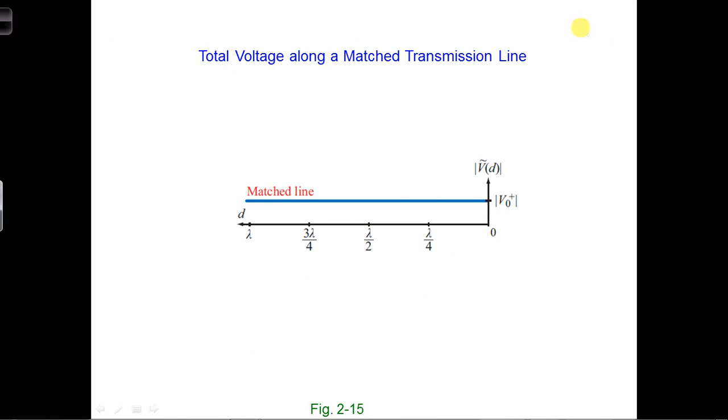We get a constant. The magnitude of the positive traveling voltage wave is all we have, and that maximum is always V0+. There's only one wave traveling to the right, and we get a flat line for the magnitude.